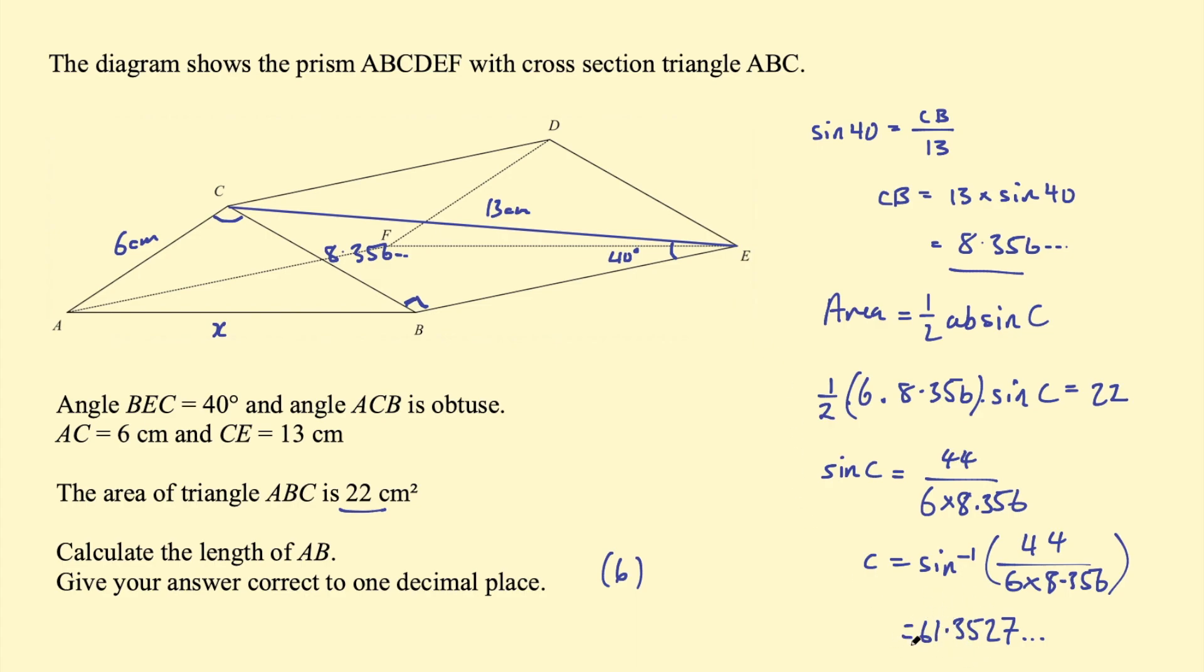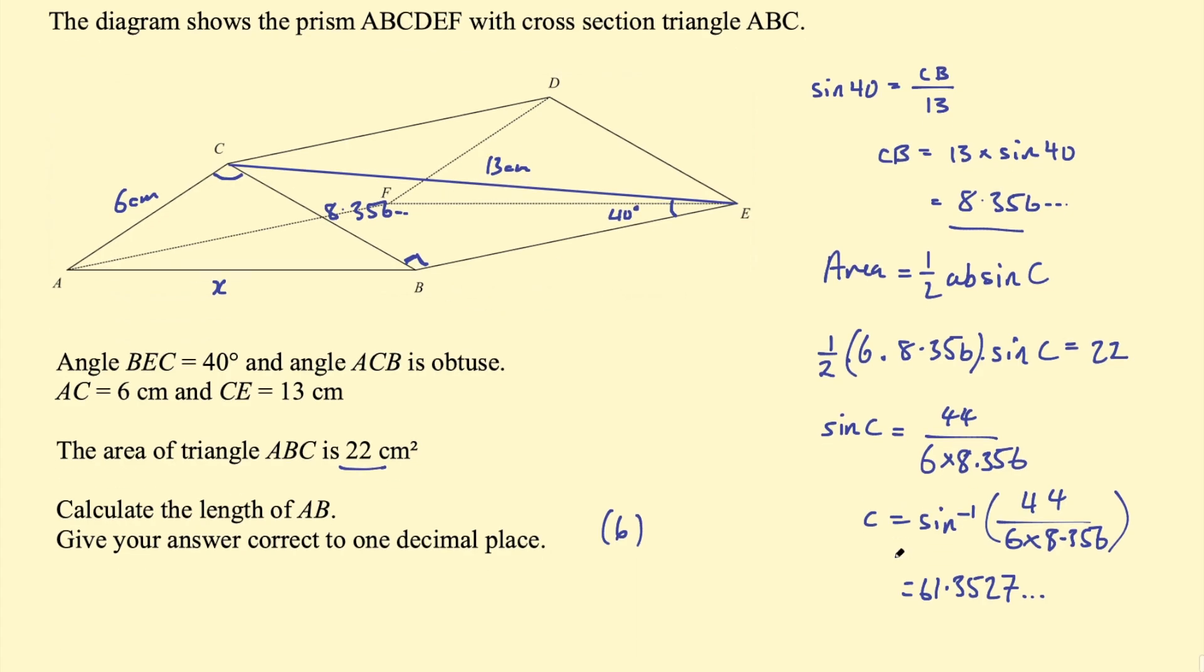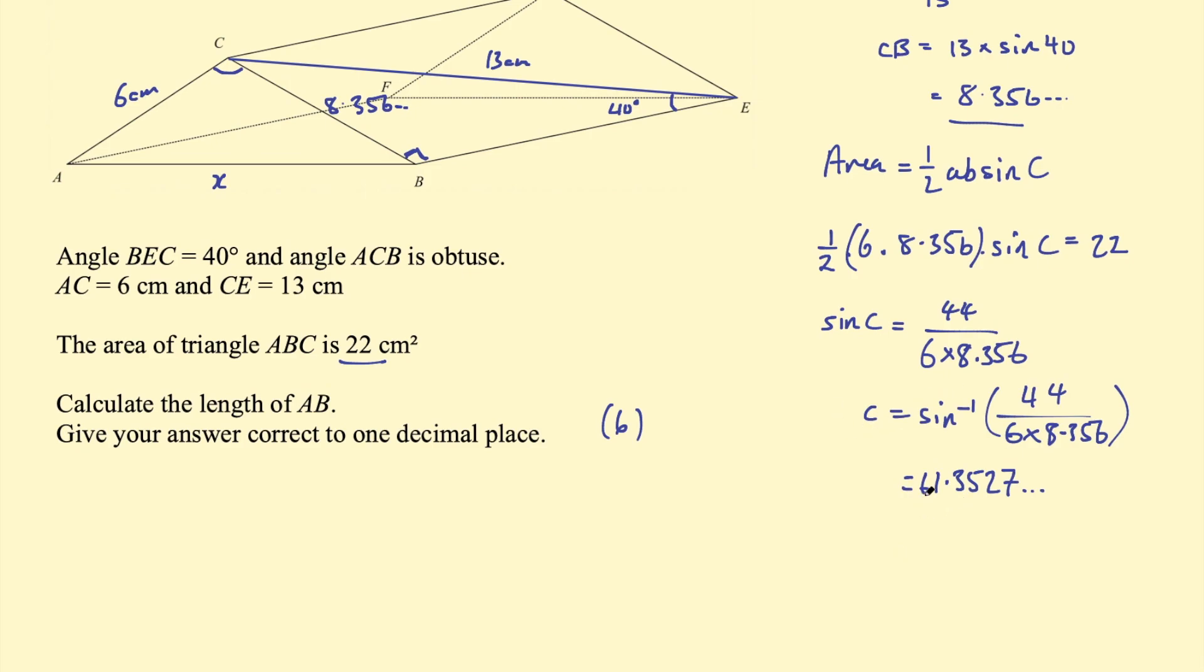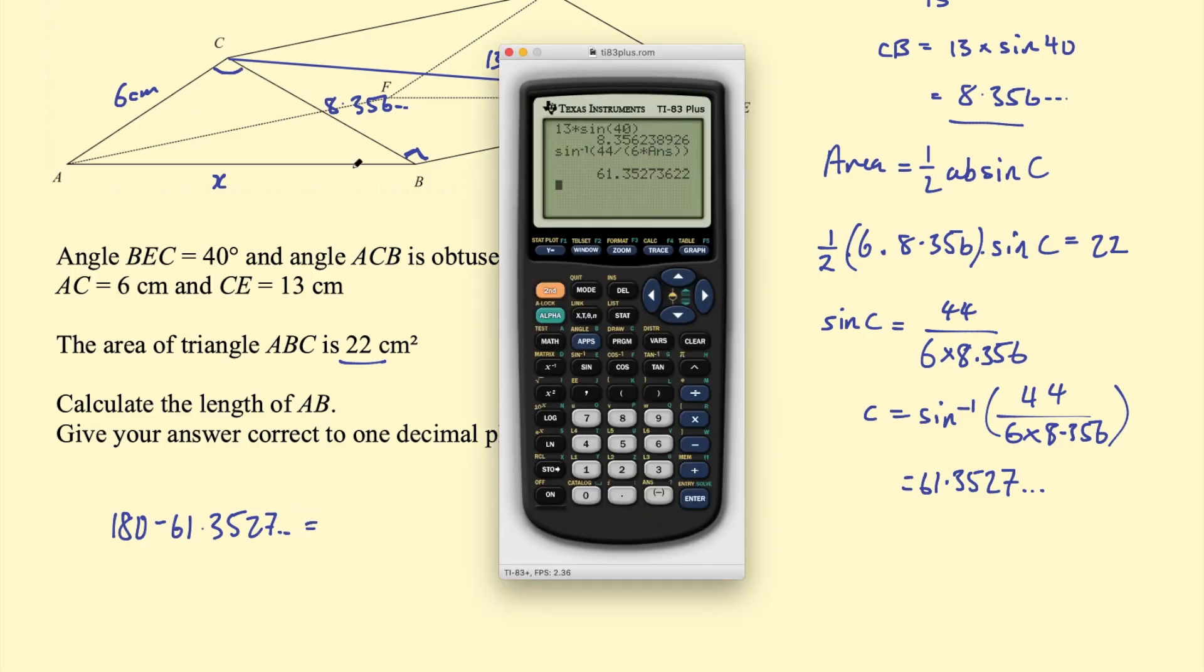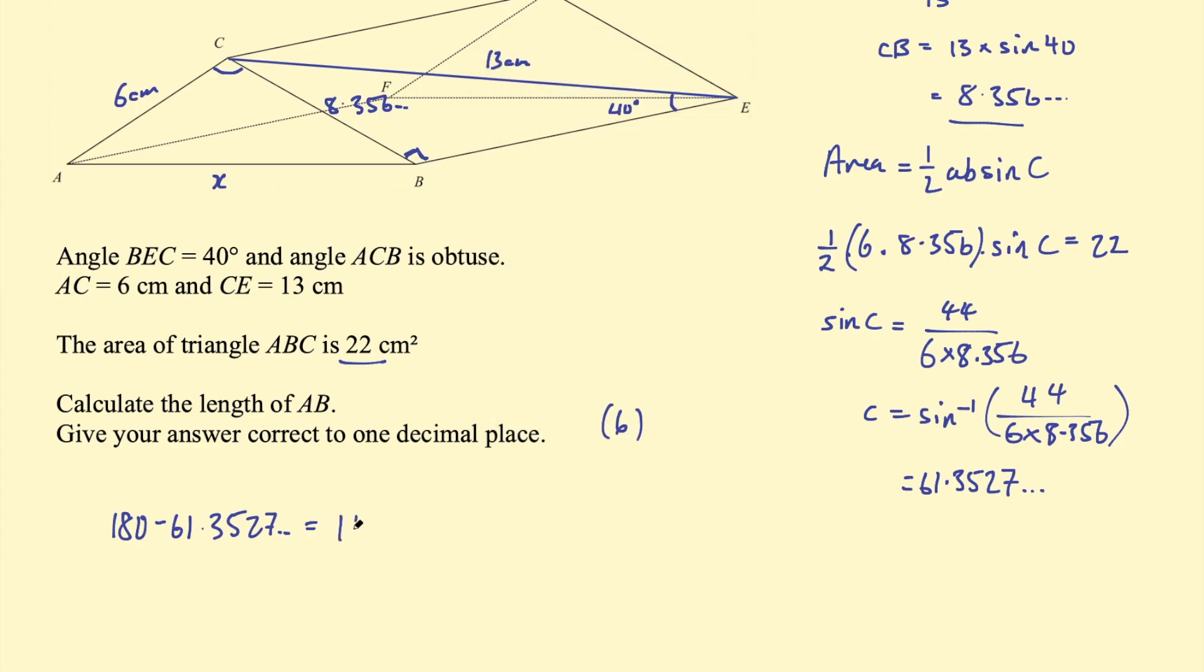So here you need to remember that when you calculate the inverse sine of something, you actually get two positive answers between 0 and 180. So we can calculate the other angle by subtracting this number from 180, and that will give us the other value of C. So let's do 180 subtract 61.3527, and we will get our angle ACB. So 180 subtract that answer, and I get 118.647, and that is that angle we're looking for.